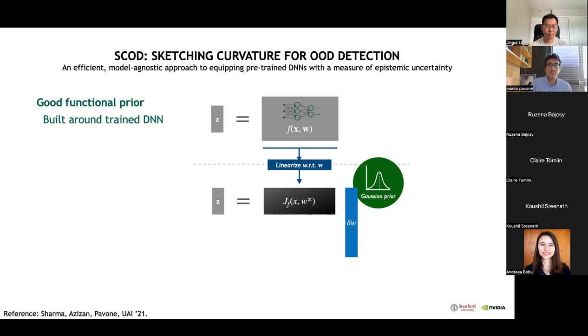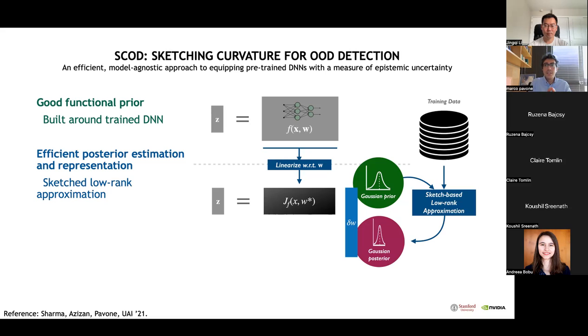Working with the linearized model allows for analytic posterior inference. I want to stress that this class of functions is still nonlinear in the input, so it's a highly representative set of priors. The posterior over the weights for this linearized model is a Gaussian whose covariance is a function of the Hessian of the training loss with respect to the weights. Even for modestly sized networks, representing this high dimensional covariance matrix can be intractable.